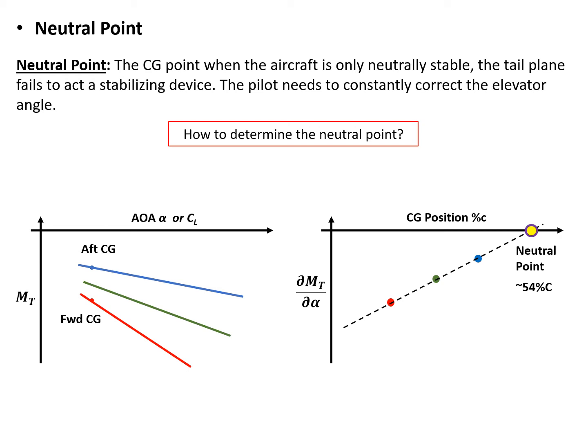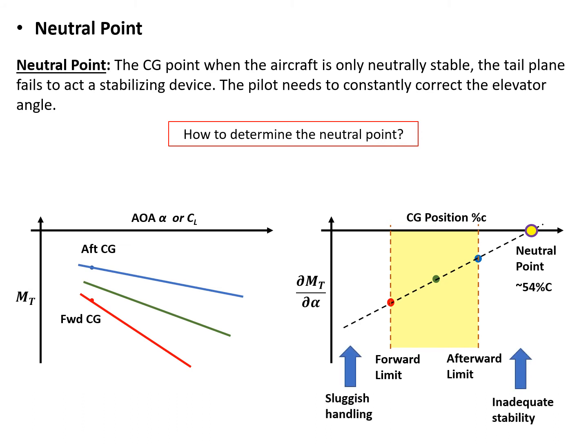Now we can see how to determine the neutral point. In practice, there is a forward limit and an aft limit for the CG. If the CG is beyond the forward limit, the handling will be very sluggish — the aircraft is very stable because the moment arm is very large. If there is a slight disturbance, it will very quickly return to a stable condition. However, during takeoff and any maneuver like climbing and descending, it is very hard to control — we call this sluggish handling.